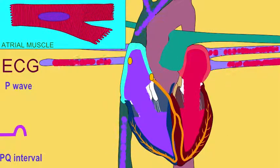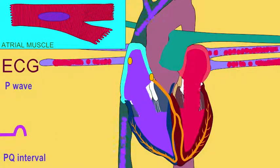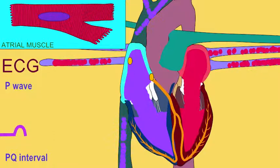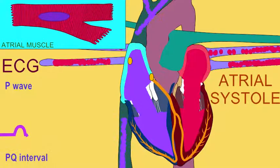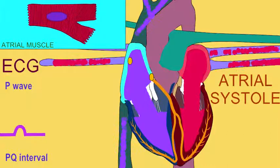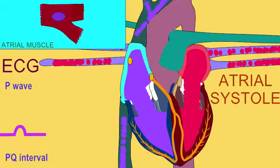Atrial systole does not immediately begin because the depolarization must go over the sarcolemma through T-tubules, release calcium from the SR, etc., and so the atrial systole begins partway through the P-wave, and because of the plateau of cardiac muscle, will last until partway through the QRS complex.